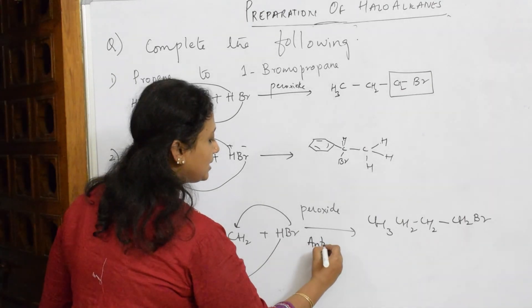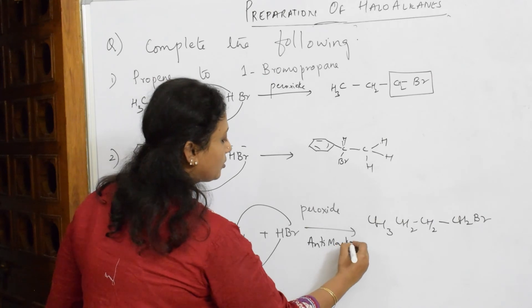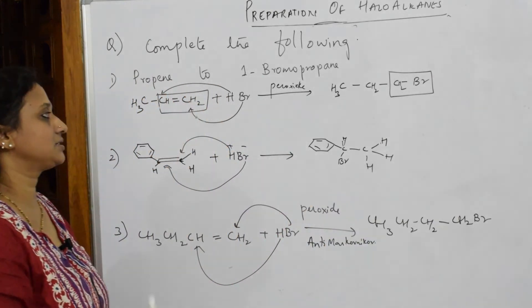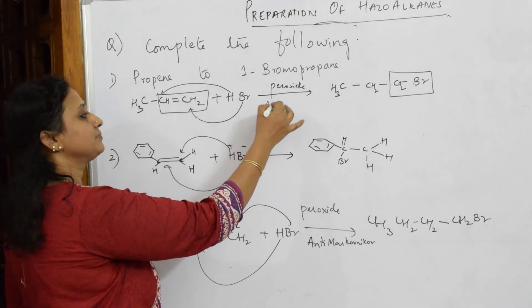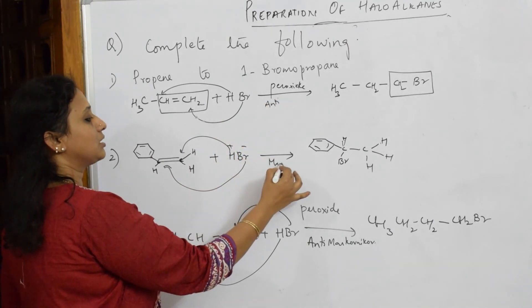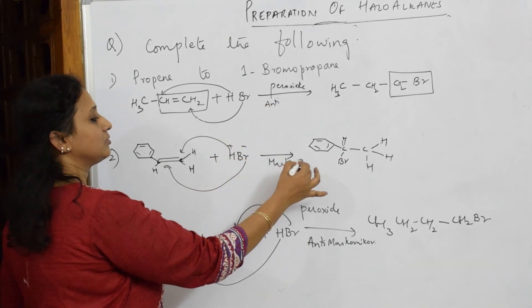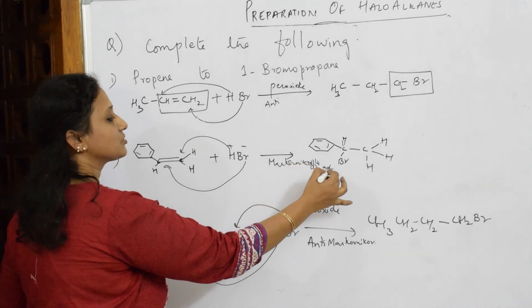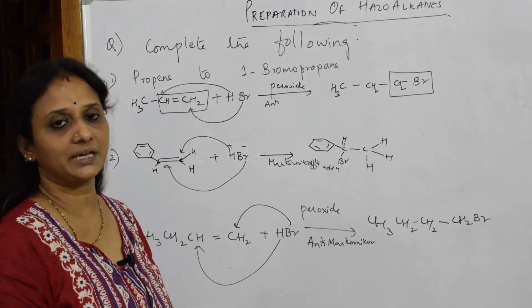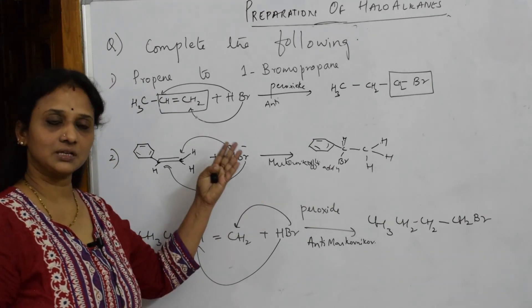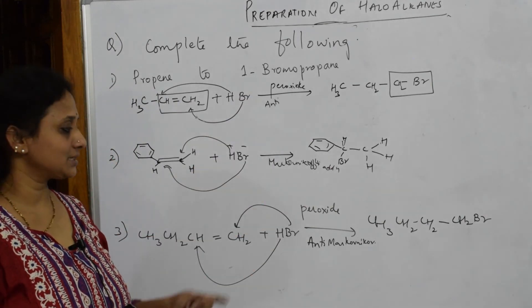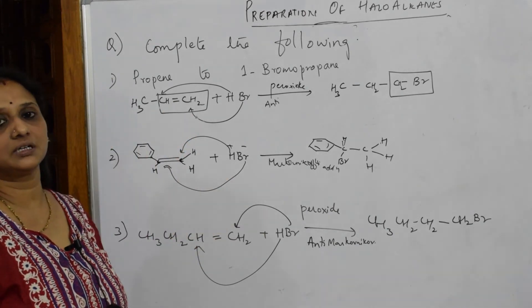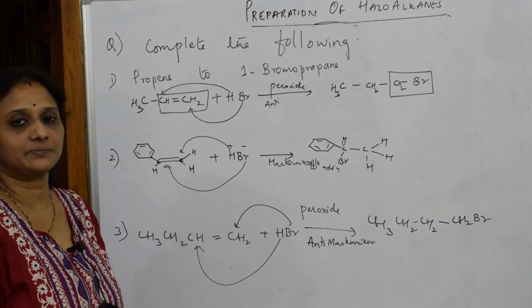So this is called anti-Markovnikov addition. This is your Markovnikov addition. So we are using the mechanism. I've listed out certain examples. Please copy it and observe carefully. Your concentration should be around the double bond. Remember that and thank you for watching.